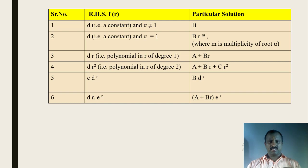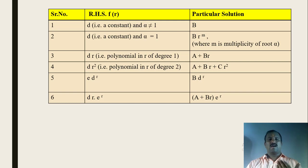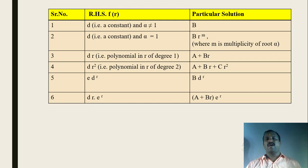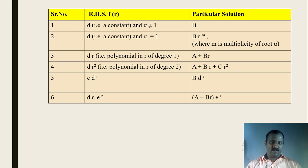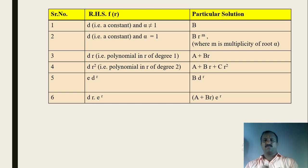Let us recall all the cases. If RHS is a constant d, particular solution is capital B. If RHS is a constant d and characteristic root alpha equals 1, particular solution is B·rᵐ where m is the multiplicity of root alpha. Third case: if RHS is polynomial in r of degree 1, particular solution is A + B·r. Fourth case: if RHS is polynomial in r of degree 2, particular solution is A + B·r + C·r².